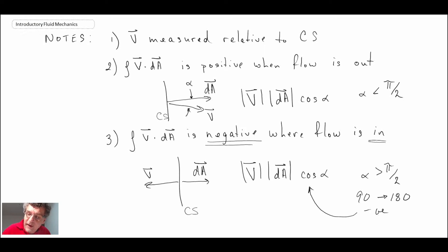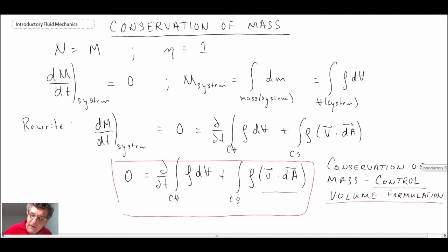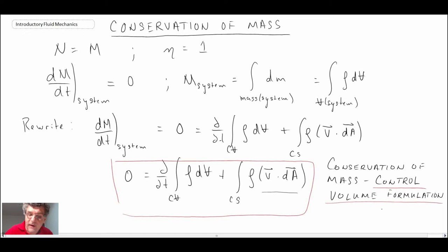Now we're going to look at special cases of our conservation of mass equation, and we're going to take a look at the first one being one where we have constant density. So let's take a look at some special cases.